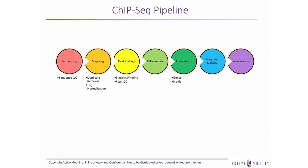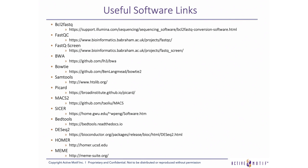To review, we've now completed our discussion of the seven primary steps of the ChIP-seq bioinformatics pipeline: sequencing, mapping, peak calling, differential analysis, annotations, fragment density, and visualization. While such pipelines undoubtedly require some programming knowledge to construct and customize, some of the open-source software tools discussed in this presentation are freely available for download, as noted in the links shown on this slide.